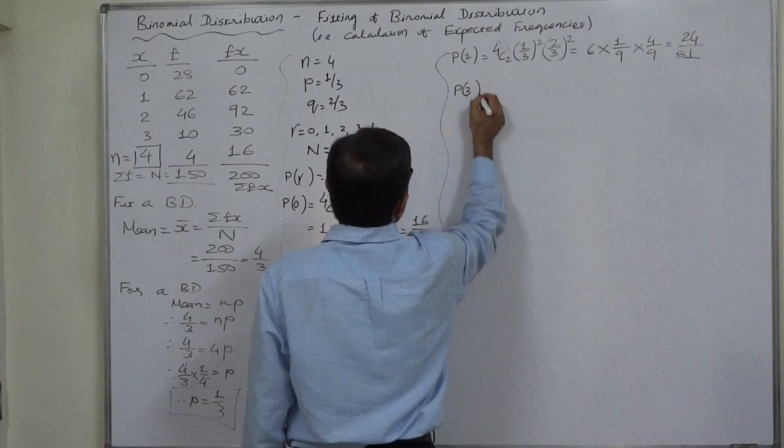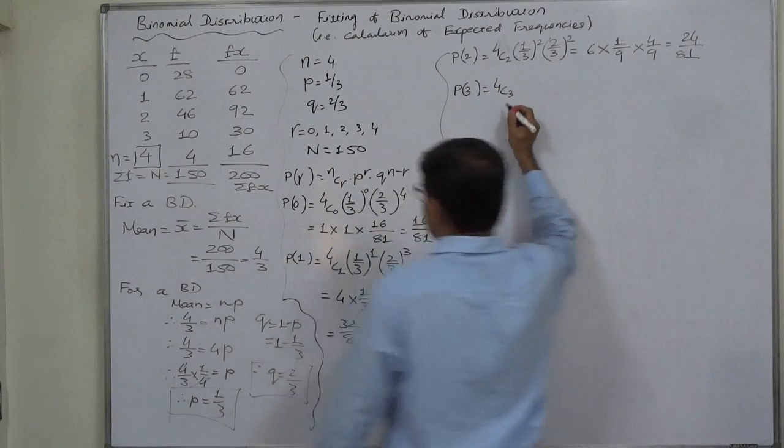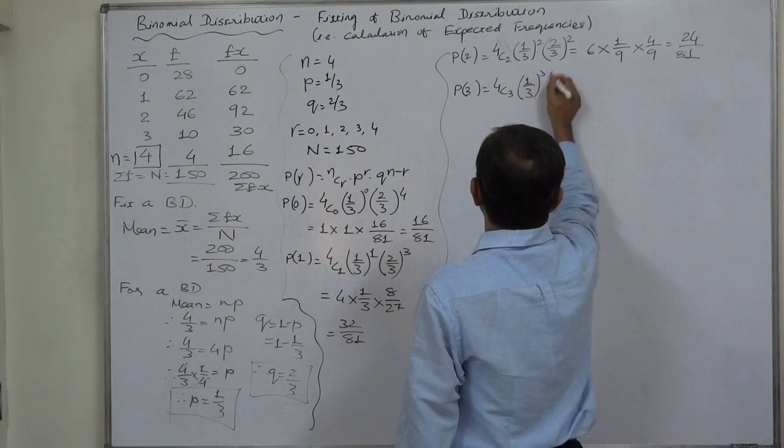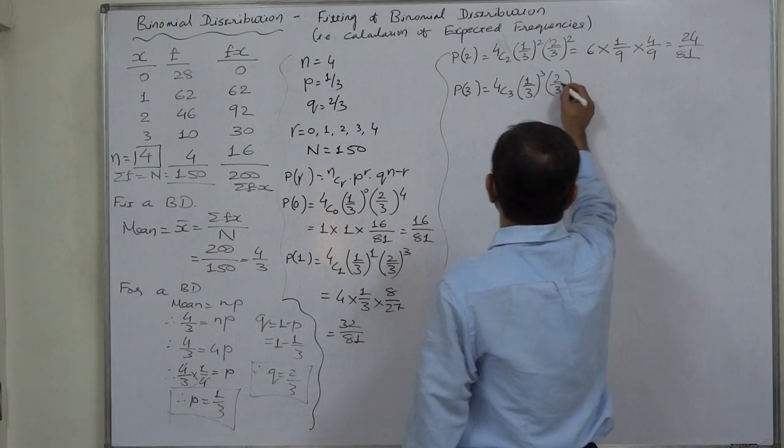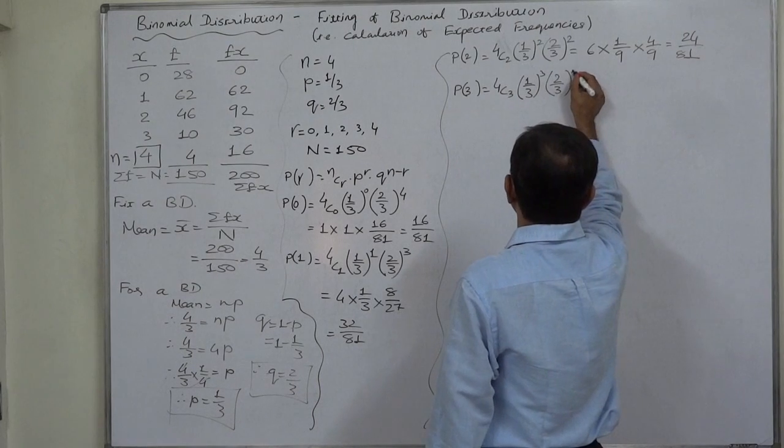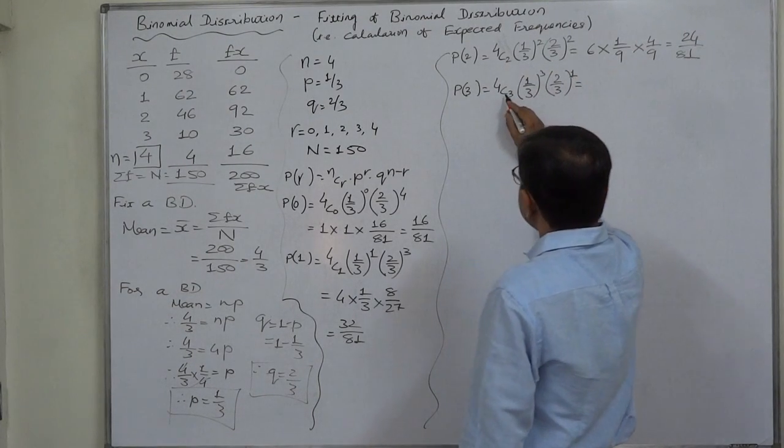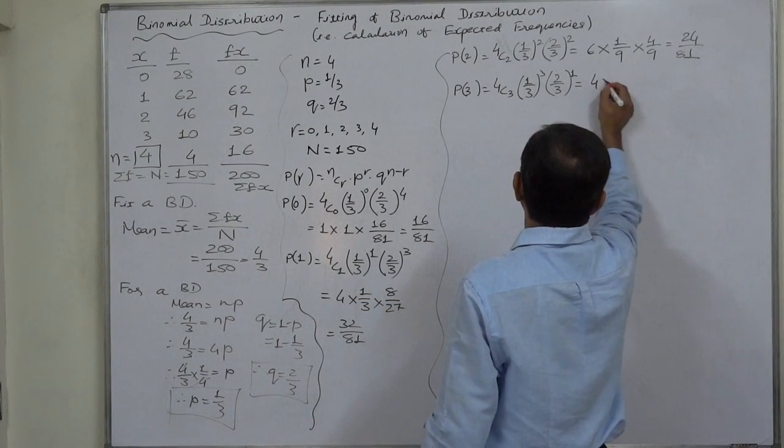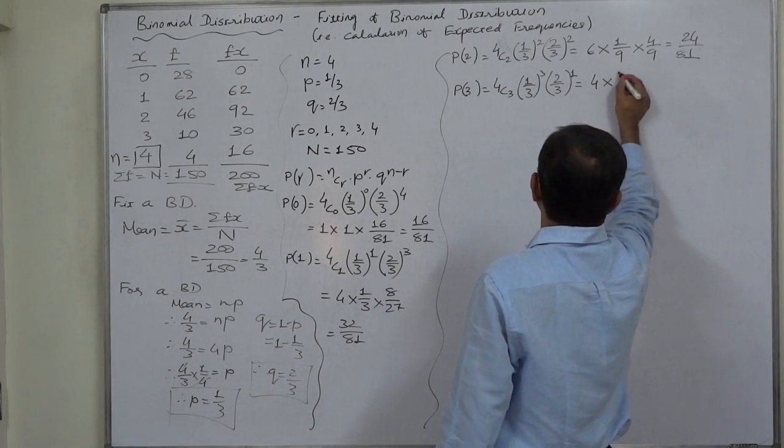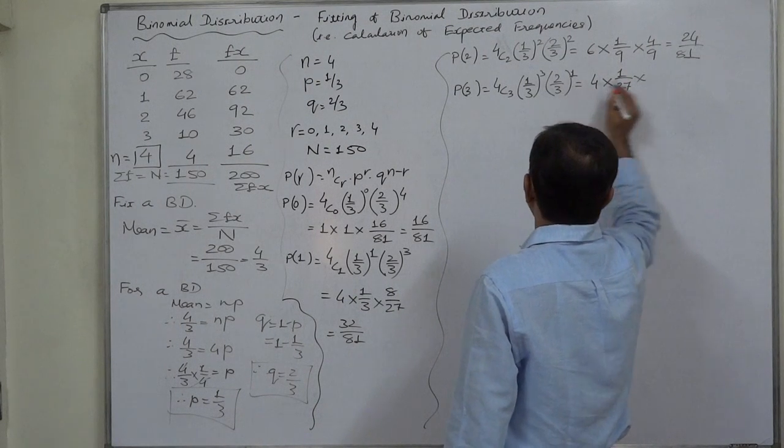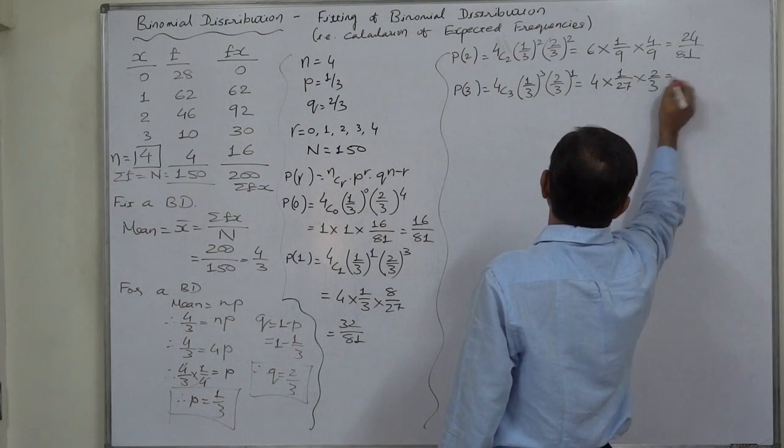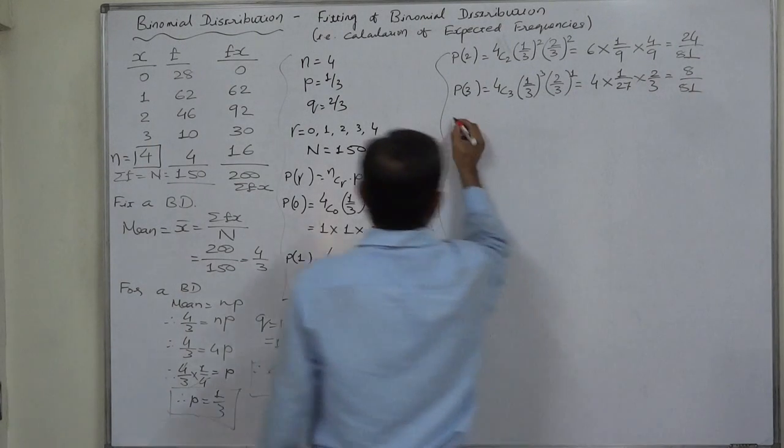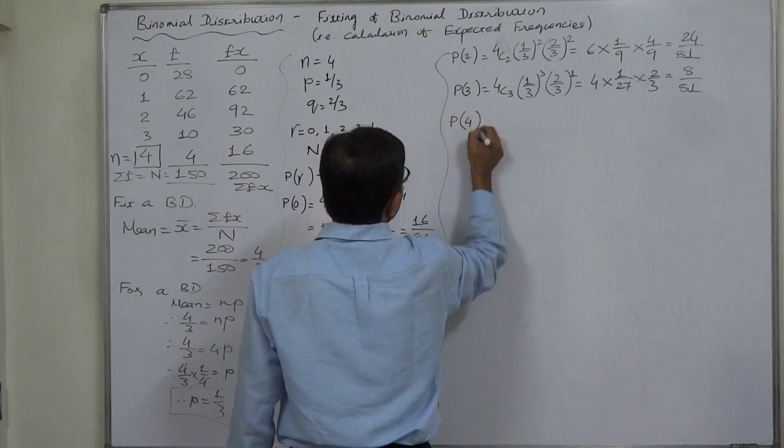P of 3. 4C3, that will be equivalent to 4C1, into 1 by 3 (that is p raised to 3) into 2 by 3 (that is q raised to 4 minus 3, 1). 4C3 is equivalent to 4C1, that is 4, into 1 by 3 raised to 3 is 1 by 27, into 2 by 3 raised to 1 is 2 by 3. 4 into 1 into 2 is 8, 8 upon 81. And the last is P of 4.